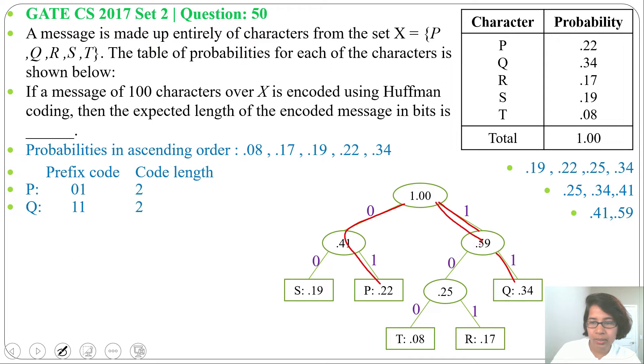Next, R prefix code is 101 and code length is 3. Next, S prefix code is 00 and code length is 2. T prefix code is 100 and code length is 3. We got the code length for every character.